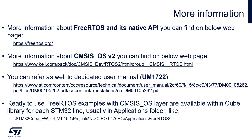You can also refer to our dedicated user manual UM1722, which can be found at the link shown on the screen. Ready-to-use FreeRTOS examples with the CMSIS-OS layer are available within the Cube library for each STM32 line, usually in the Applications folder — as shown in the example for the Nucleo L476RG board.